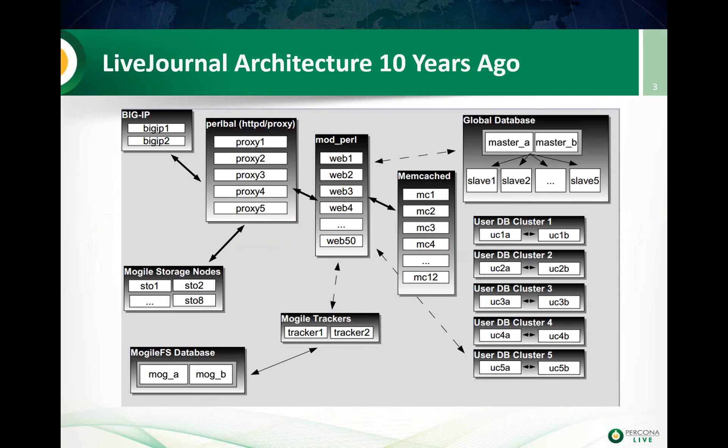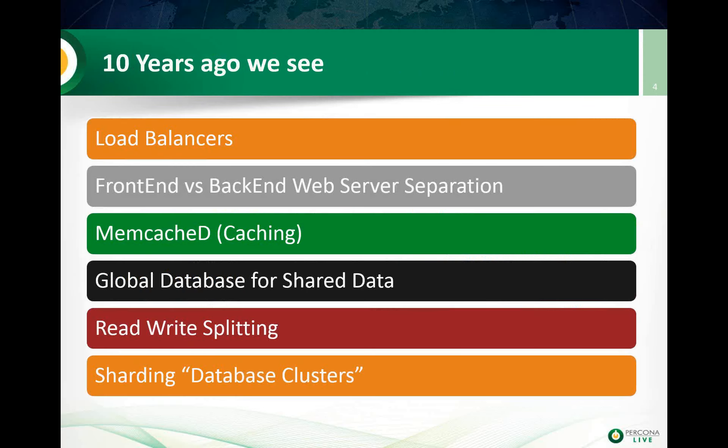Before we go to all of that, I wanted to take a look at this picture which is essentially the design of LiveJournal as posted about 10 years ago. What I think is amazing is that 10 years ago — a long time in technology — we see architecture very similar to what we can often see today. We see the use of Memcache for caching, a master and slave for read-write splitting, and user clusters for sharding.